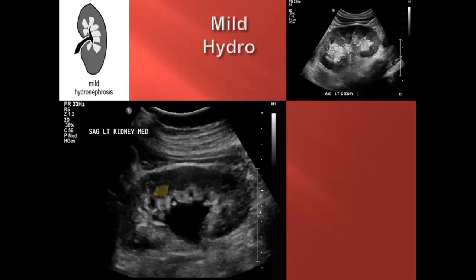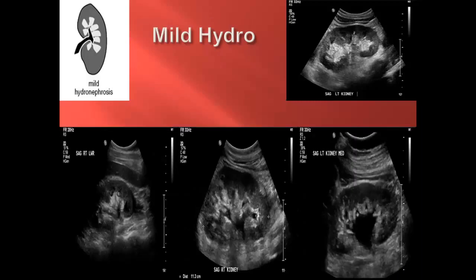Note, however, that the pyramids are not blunted and the sinus is not splayed like we see in moderate hydro. So rather than the degree of pelvic dilation, which is indeed more prominent in this example, it is the preservation of the renal pyramids that characterizes mild hydronephrosis. Please take a moment to familiarize yourself with the spectrum of mild hydronephrosis. Recall that mild central dilation of the sinus and preservation of renal anatomy characterize mild hydro on ultrasound.